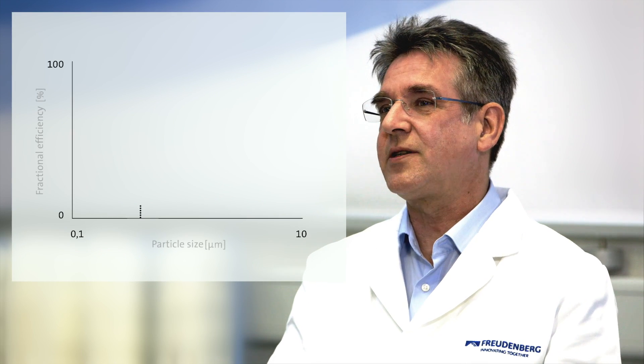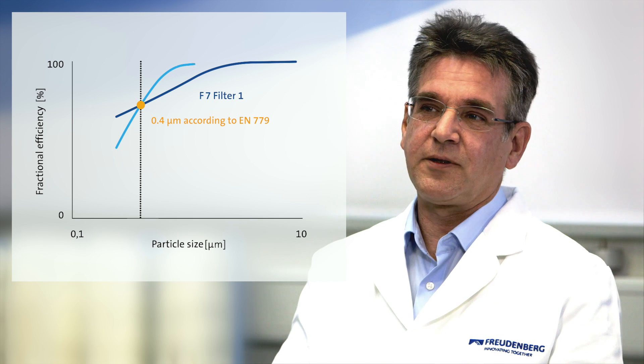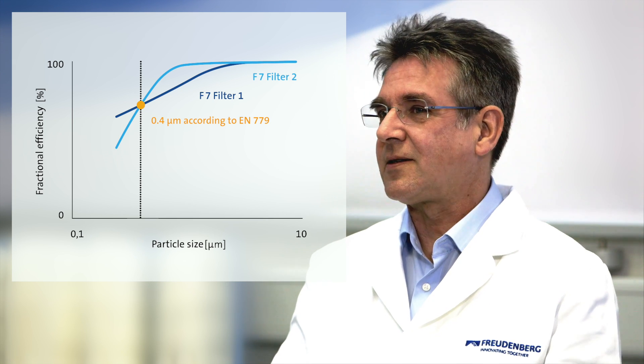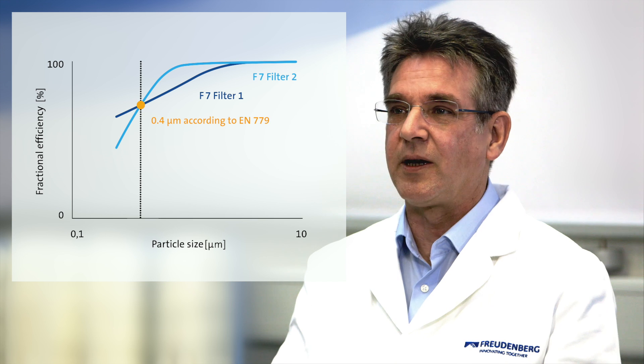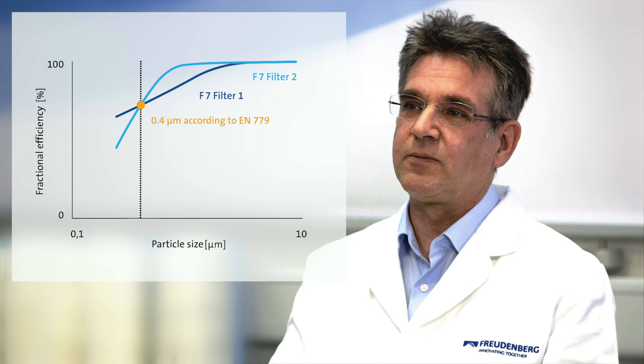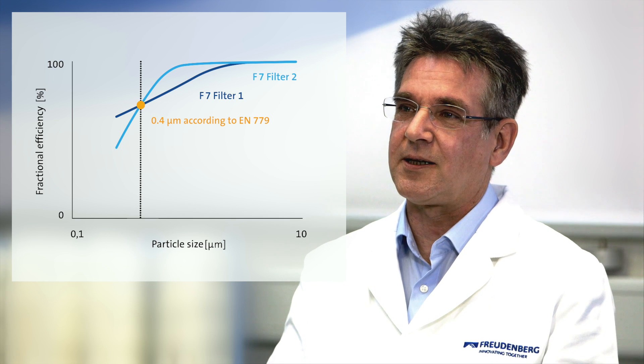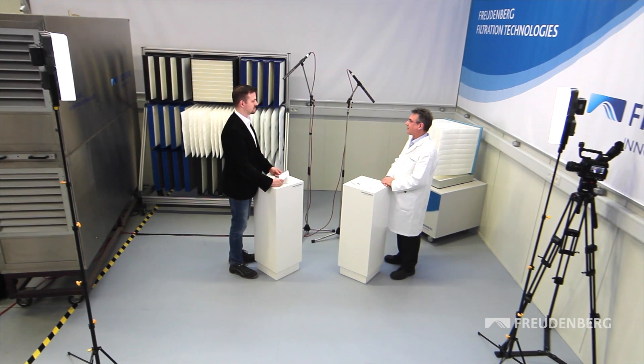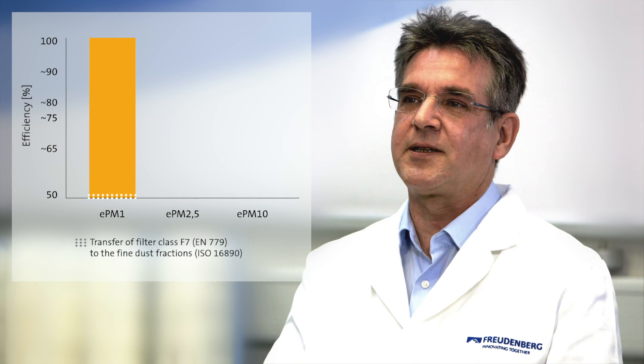How will an F7 filter be rated in the future? Unfortunately, this question cannot be answered precisely, as the new ISO standard evaluates different properties of an air filter than the current EN 779. Filters classified today as F7 — having the same efficiency for 0.4 micrometer particles — might have totally different efficiencies for other particle sizes, such as 1 micron or 10 micrometers. Consequently, these filters will also be rated differently under the new ISO standard. As a rule of thumb, most currently available F7 filters will be rated in the future as ISO EPM1 between 50 and 65%.